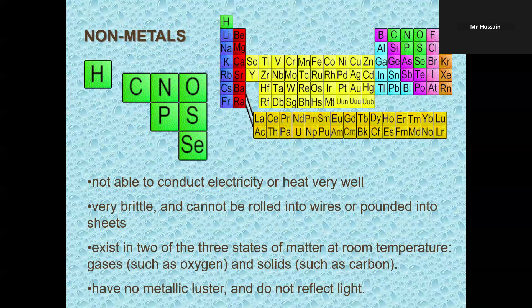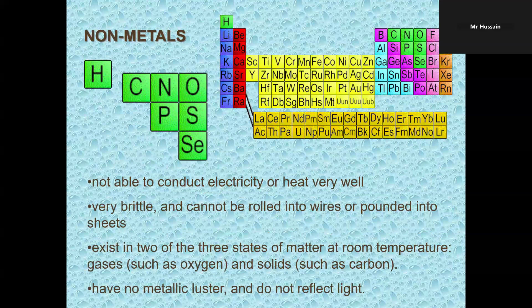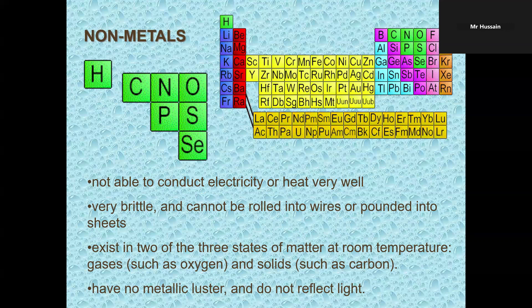Non-metals. Every element or all elements on the right side of metalloids are non-metals. Non-metals means they cannot conduct electricity or heat. They are brittle. If you hammer them, they will be shattered. They exist in two of the three states of matter at room temperature: gases such as oxygen, solids such as carbon. They are not shiny, they do not have luster, they do not reflect light.